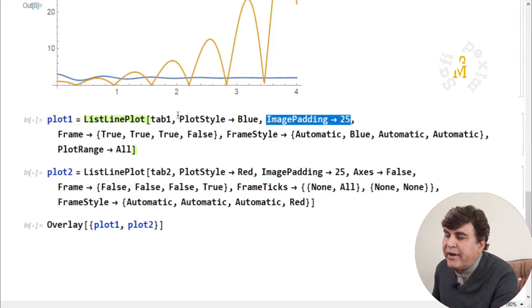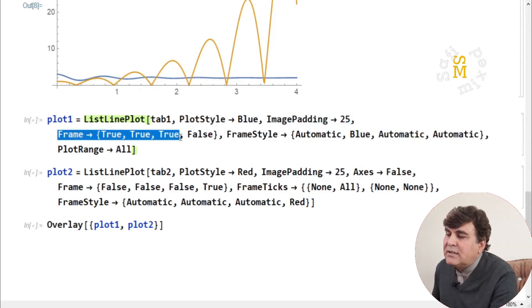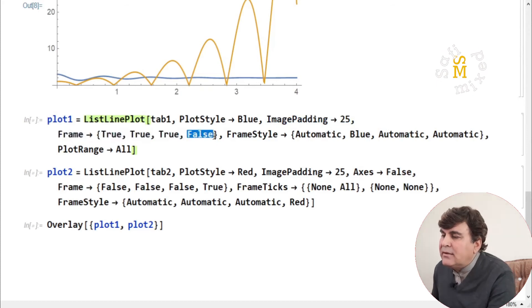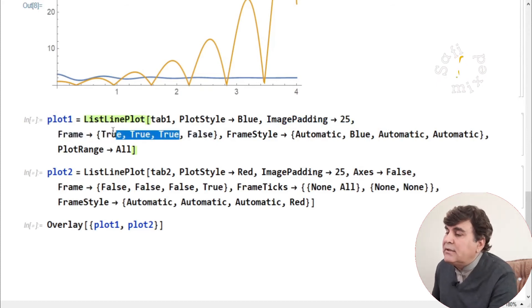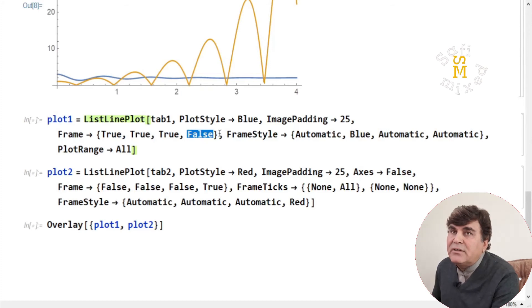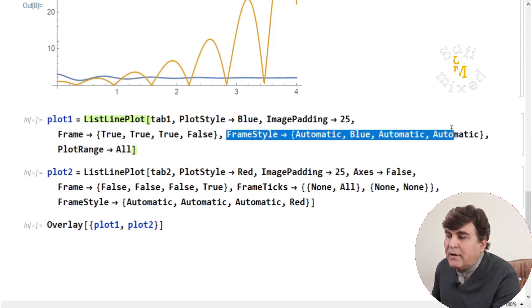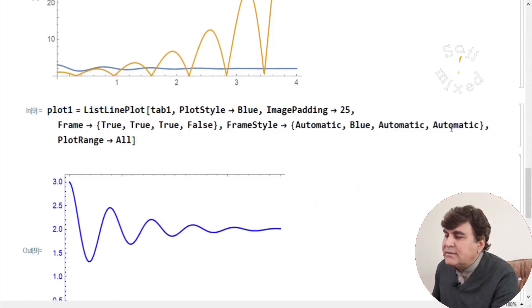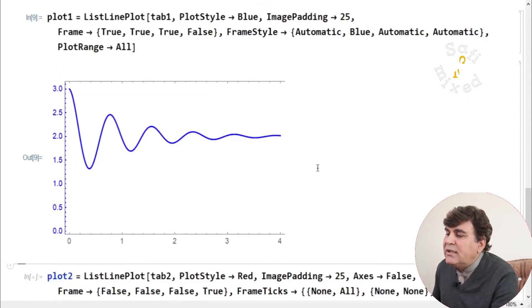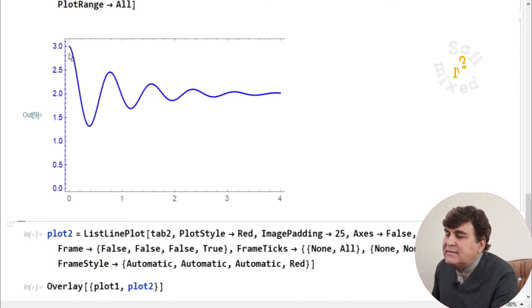Then I give it Frame true, true, true, false. These trues will show the axis lines at three sides of the frame while the fourth one will be missing. You can similarly go for these options.